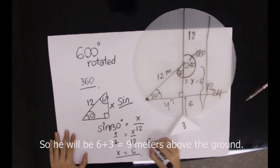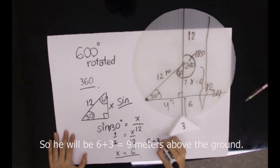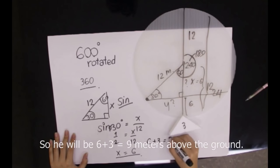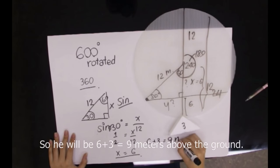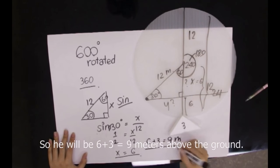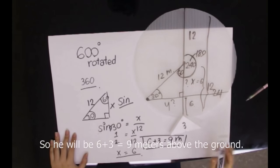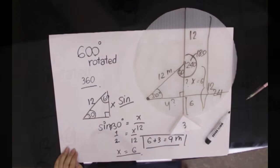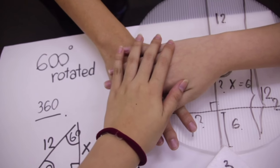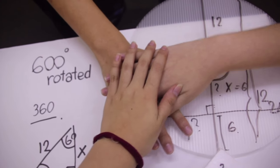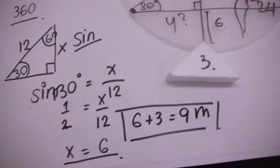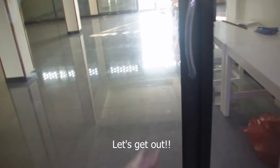So, the height will be 6 plus 3, equal to 9 meters above the ground. All right, let's get out!